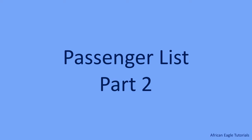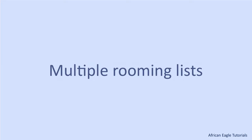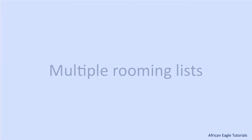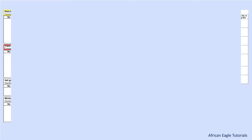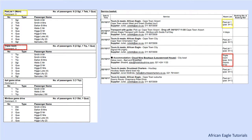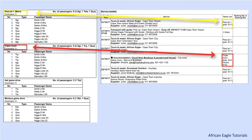This video is part 2 of 3 on the use of the passenger list page. It might be necessary to create more than one rooming list for a project due to client preference or provider limitations. The additional rooming lists are created and linked to the applicable services.